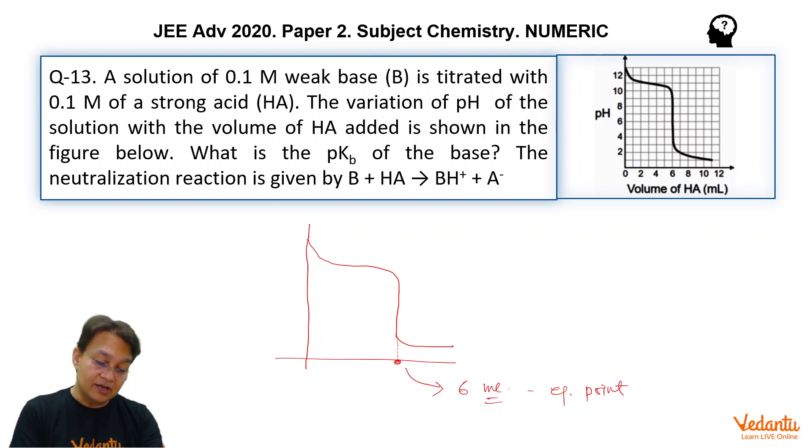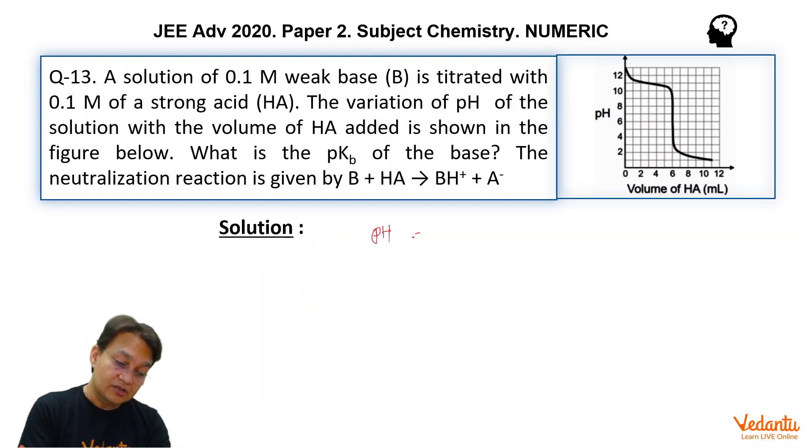If 6 ml is the equivalence point, the halfway that is 3 ml must be half equivalence point. So on the graph, at the 3 ml, if you just take this line here and join it on the y-axis, you will find pH is 11. That means pH at half equivalence point is equal to 11. Now from this information, you have to get the pKb of the base.